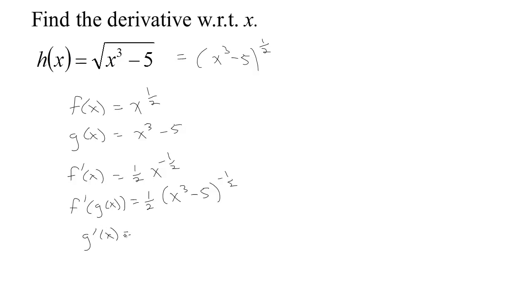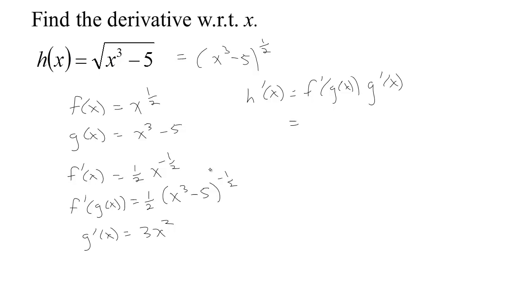And of course the derivative of the inside is 3x squared, since the derivative of x cubed: the 3 comes down, you get x to one power less, and the derivative of the constant negative 5 is just 0. So according to the chain rule, the derivative is the derivative of the outside evaluated at the inside, multiplied by the derivative of the inside. We figured out that first piece is one half times x cubed minus 5 to the negative one half, and then we have 3x squared.